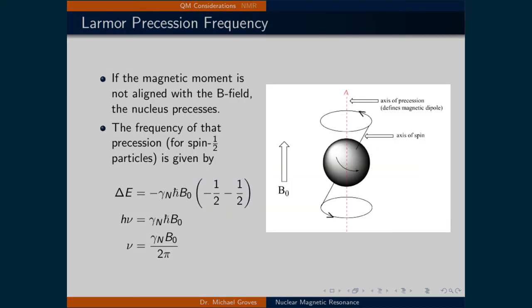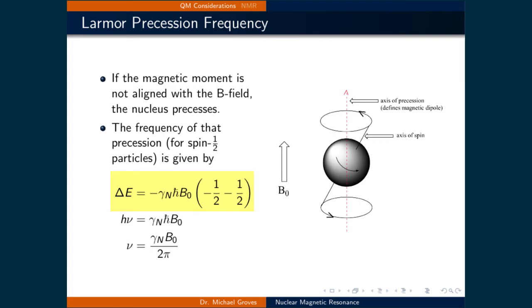Now, if the magnetic moment of the nuclei is not aligned with the magnetic field, the nucleus precesses, meaning that it spins around the direction of the applied magnetic field. The frequency of the precession for spin one-half particles is given by the total energy difference between the two states. So delta E is equal to negative gamma times h bar times the applied magnetic field times negative one-half minus one-half. That adds to minus one, which cancels out the negative sign at the front. On the left-hand side, delta E is equal to Planck's constant times the frequency.